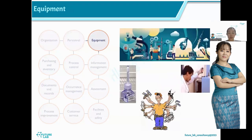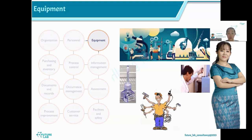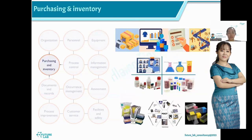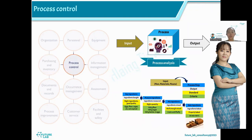We have to talk about the main resource of the equipment — function check and calibration. For purchasing and inventory, we have to consider first-in first-out, first expire first out, and the 5S system.